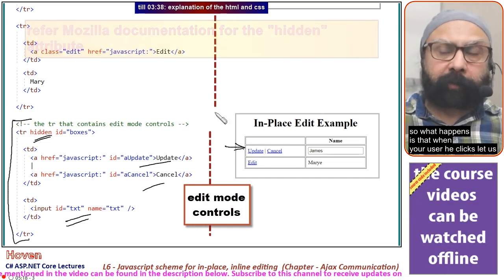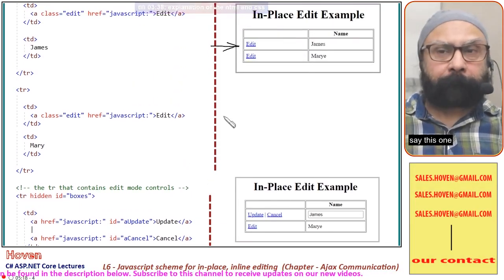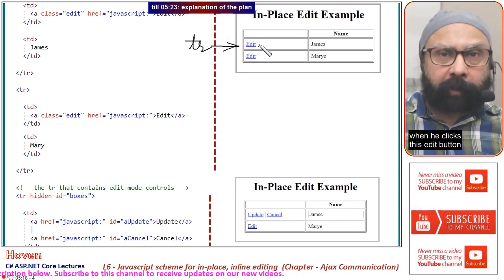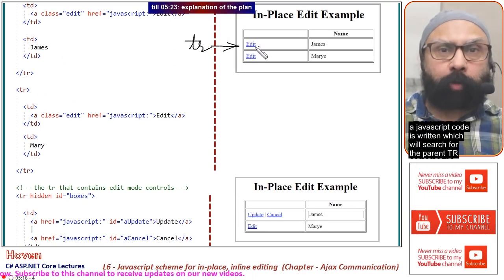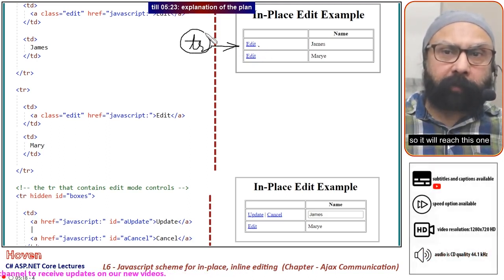What happens is when the user clicks, let's say, this one—when he clicks this edit button, JavaScript code will search for the parent tr, so it will reach this one.